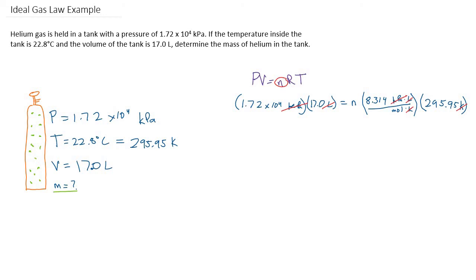The ideal gas constant, this 8.314, is written with these units and the number belongs with these units. The ideal gas constant could be calculated in different units, for example atmospheres instead of kilopascals, and it would be a slightly different number. So you do have to make sure that you're using the right units for the ideal gas law.